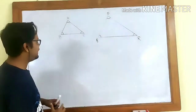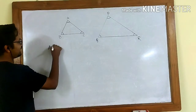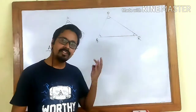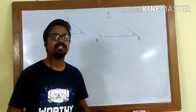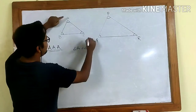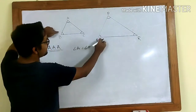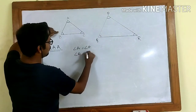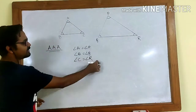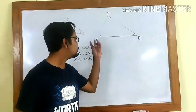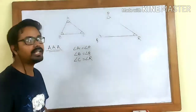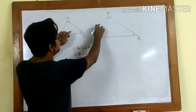According to the Angle-Angle-Angle criteria, or AAA criteria, if the corresponding angles are equal then the two triangles are similar. So if angle A equals angle P, angle B equals angle Q, and angle C equals angle R, and we have these three equal, then the two triangles will be similar. Because if we have the angles equal, then automatically the sides become proportional.